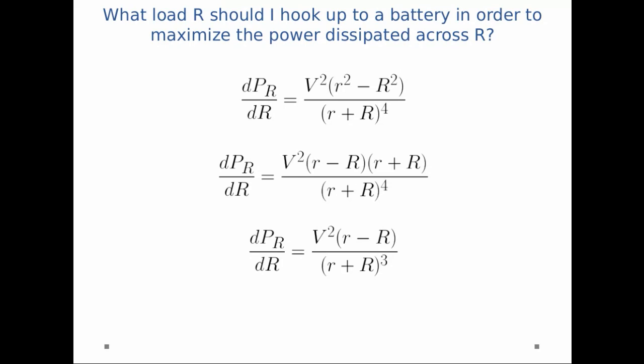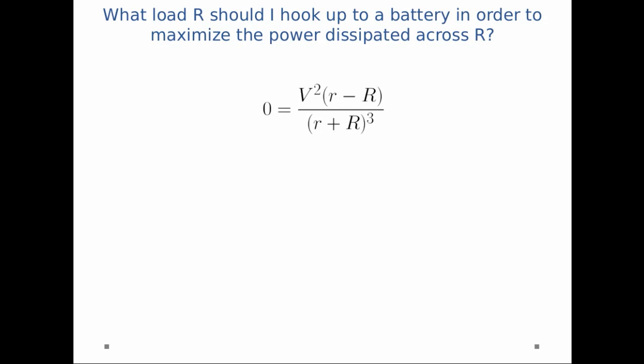Now remember if we want to find a maximum or minimum we set the derivative equal to zero. So I set that equal to zero. V squared is just a constant so I can divide by V squared. And little r plus big R in the denominator is always going to be some positive number, but little r minus big R in the numerator might be something different. So zero is equal to little r minus big R.